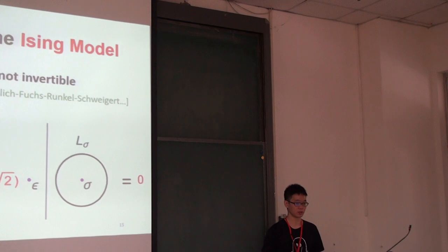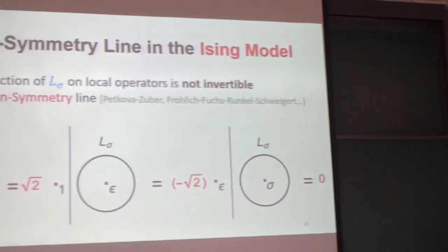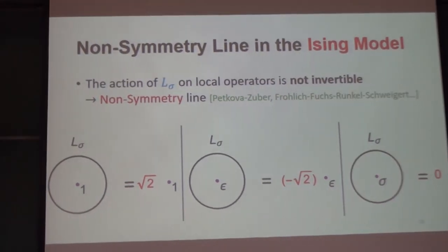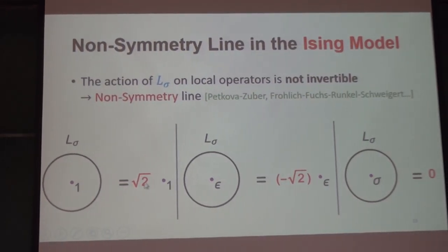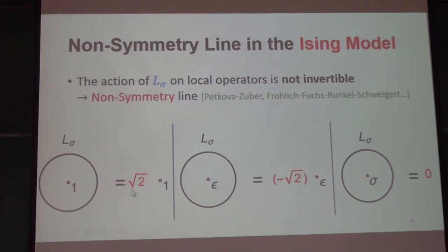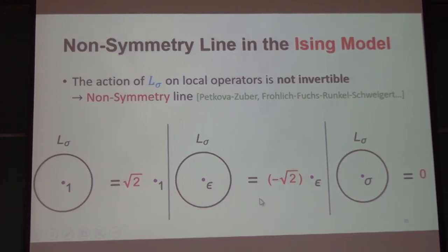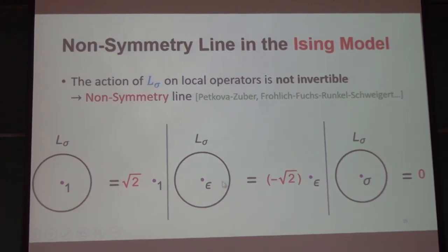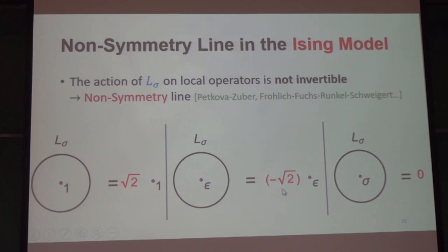Moving on to the non-symmetry line L_sigma: it acts on the vacuum by a factor of square root of 2, and it acts on the energy operator by a factor of minus square root of 2.